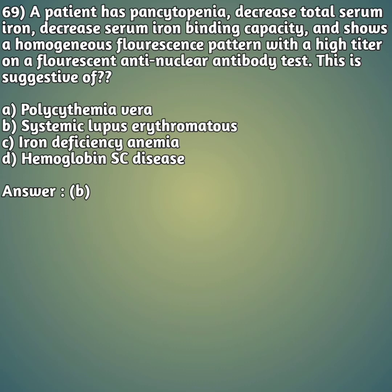Pancytopenia means decreased in all blood cells - decreased RBC, WBC, and platelets. The right answer is option B - systemic lupus erythematosus (SLE). SLE is a kind of autoimmune disease.